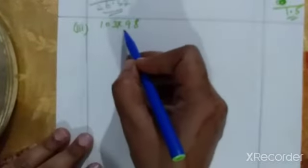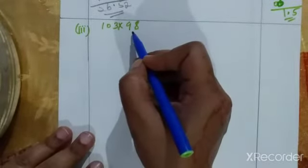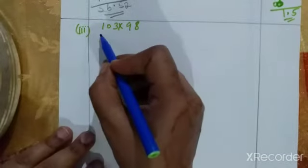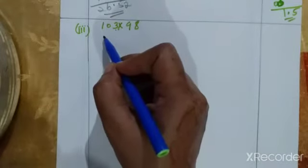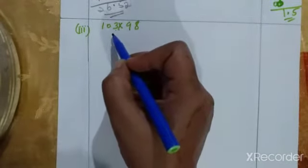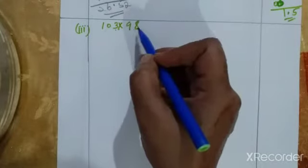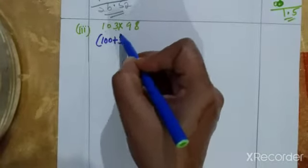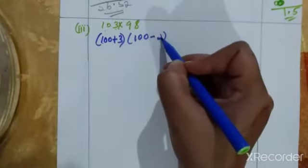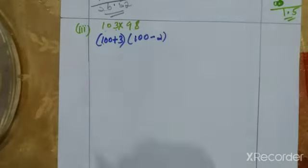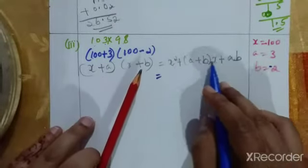Next, question 8(3): 103 into 98. We use the (x+a)(x+b) formula, so we need x to be the same in both. Think: 103 = 100+3 and 98 = 100−2. So x value is 100, a value is 3, and b value is −2.